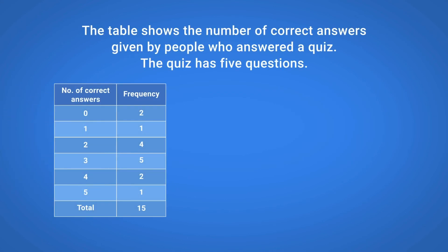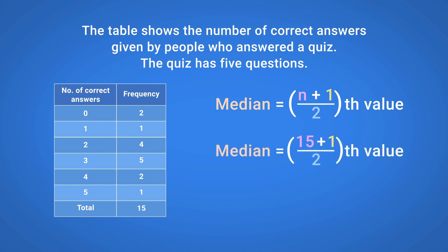Let's look at an example. The table shows the number of correct answers given by people who answered a quiz. The quiz has five questions. We can find the Median using the Median formula. There are 15 values, so n equals 15. Therefore, the Median is the eighth value.